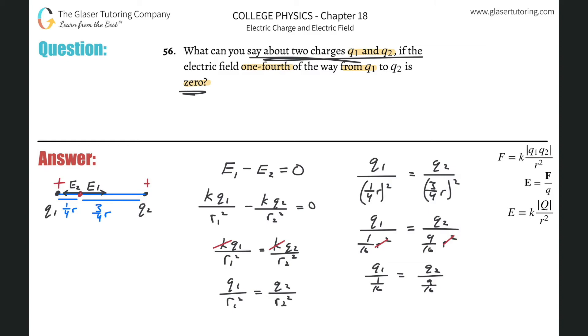So now when they ask us, what can you say about q one and q two? What they're essentially trying to ask you is create a ratio, of q one relative to q two or q two relative to q one. They don't give us any information about how to look at it. So you're free to choose whatever way you want.